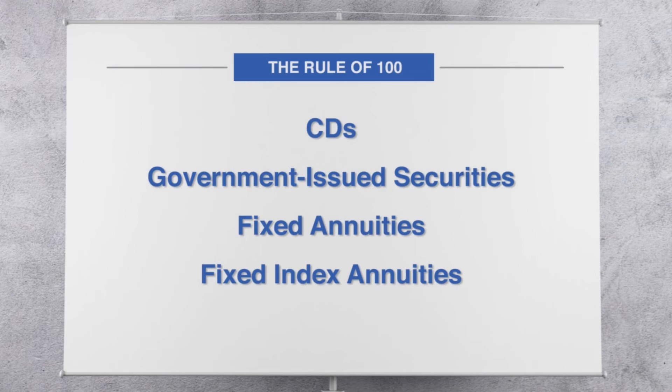What each of these have in common is that they are not subject to losses due to market fluctuation. So when using the Rule of 100, these are the vehicles you may, with the help of your financial professional, want to consider to help balance the assets you have allocated to risk.